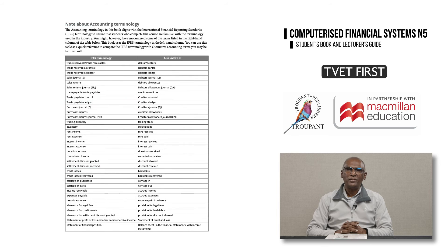The new N5 curriculum introduces up-to-date terminology which follows the latest accounting standards. Examples of updated terminology include Statement of Comprehensive Income, Statement of Financial Position, Statement of Cash Flow, Inventory Turnover Rate, Trade Receivables Collection Period, Trade Payables Settlement Period, and Trade Receivables Turnover Rate.